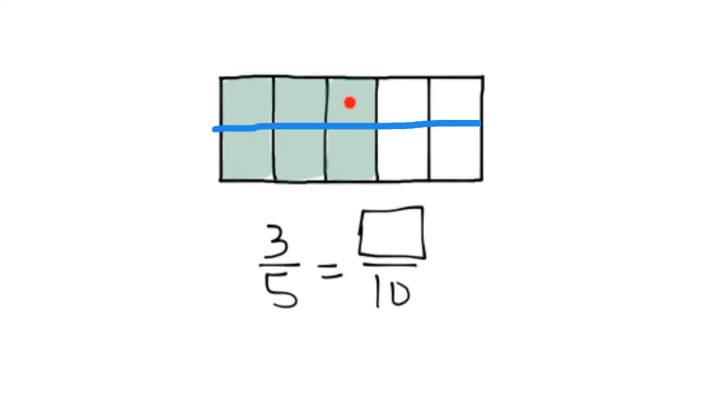One, two, three, four, five, six, seven, eight, nine, ten. So if I now have ten pieces, what's my numerator? Well, it's no longer three. It's now one, two, three, four, five, six. So my numerator is now six.